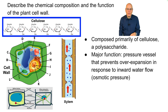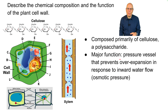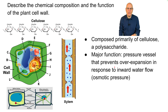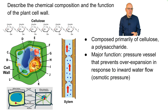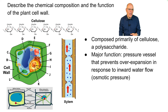The major function of the cell wall is to act as a pressure vessel that prevents over-expansion in response to the inward flow of water — osmotic pressure. As water flows into a plant cell, the central vacuole expands to look like this.